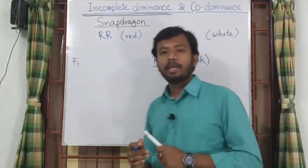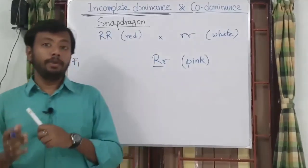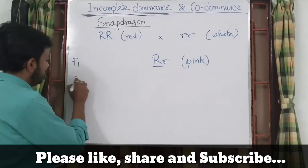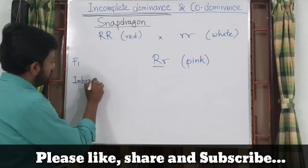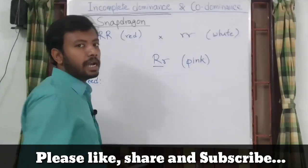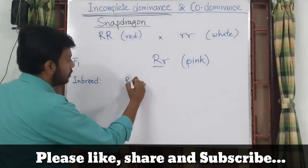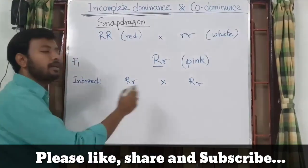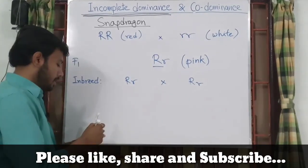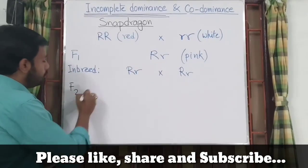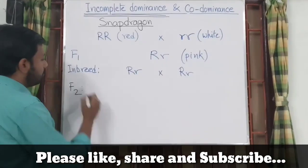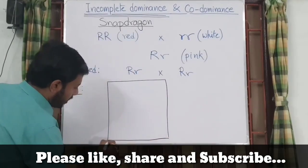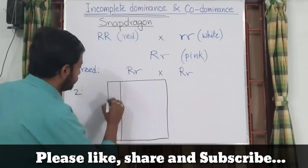Now if we self-cross any two F1 hybrid individuals and try to find out the outcome in the F2 generation, we need to inbreed two such F1 hybrid organisms. So let's self-cross two pink-colored snapdragon flowers and find out the type of F2 generation offspring with the help of a Punnett square.